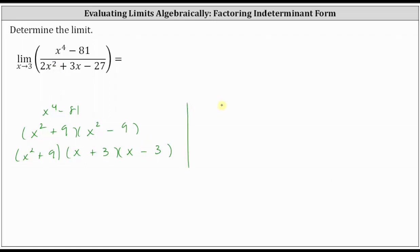Now let's work on factoring two x squared plus three x minus 27. This will be a little more challenging because the leading coefficient is not one, and two is not a common factor. So if it does factor, we will have two binomial factors.